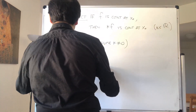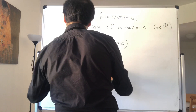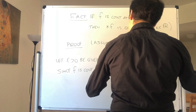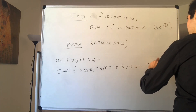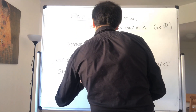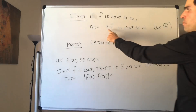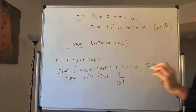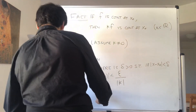Let's prove this. Let epsilon be given. Since f is continuous, there is some delta such that for all x, if |x minus x naught| is less than delta, then |f(x) minus f(x naught)| is less than epsilon over |k|. We need |k| in the denominator because we're multiplying by k, and k might be negative — hence the absolute value. That's also why we need k to be non-zero.